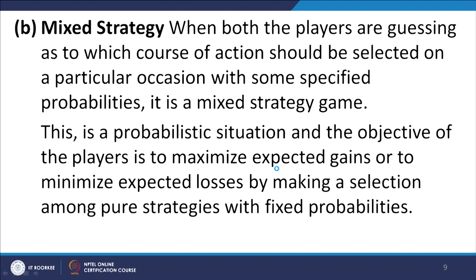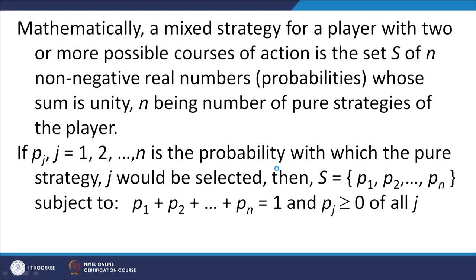The second strategy type is mixed strategies. This is when both players are guessing which course of action to select on a particular occasion with some specified probabilities — it is a mixed strategy game. This is a probabilistic situation and the objective is to maximize expected gains or minimize expected losses by selecting among pure strategies with fixed probabilities. Mathematically, a mixed strategy for a player with n possible courses of action is a set S of n non-negative real numbers representing probabilities whose sum is unity, where n is the number of pure strategies.